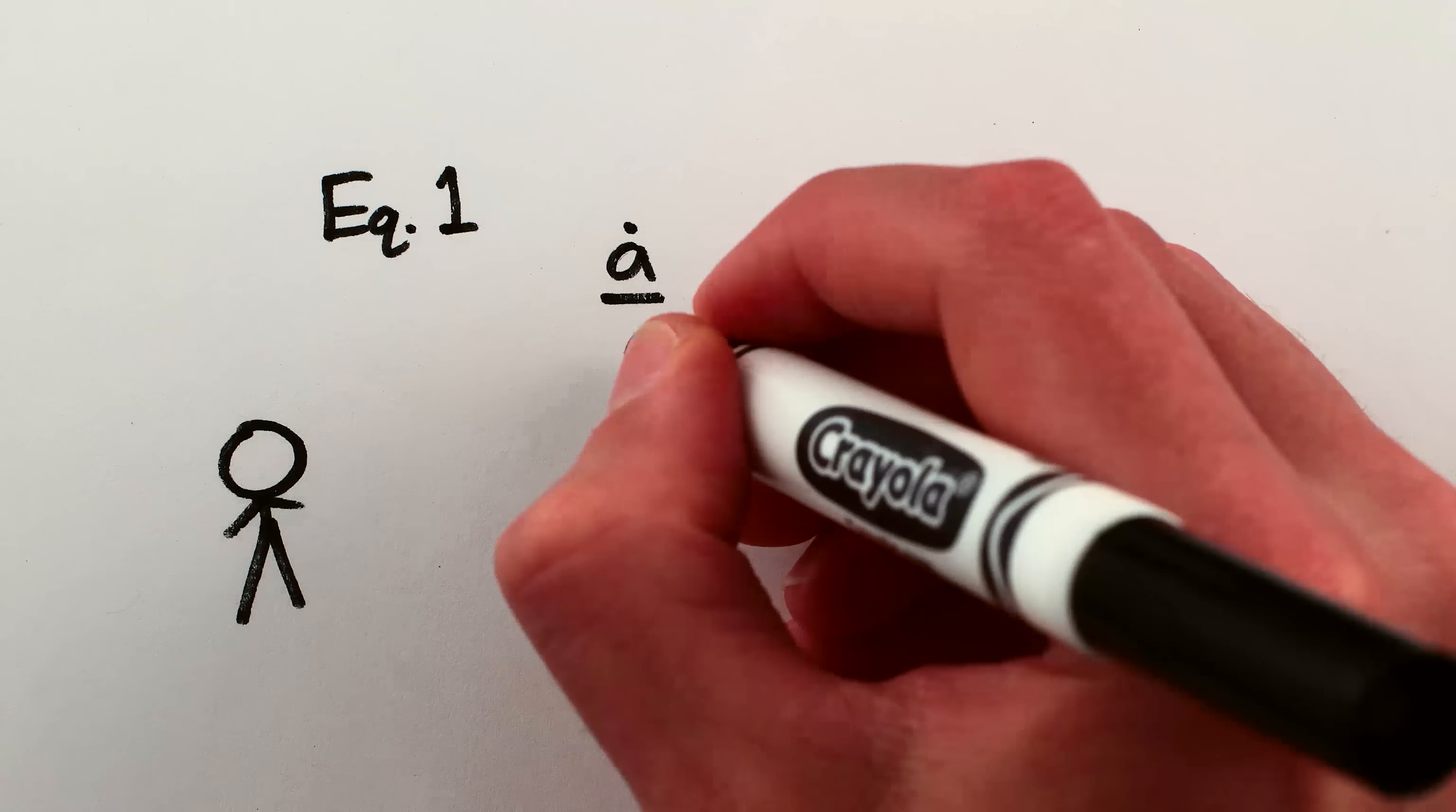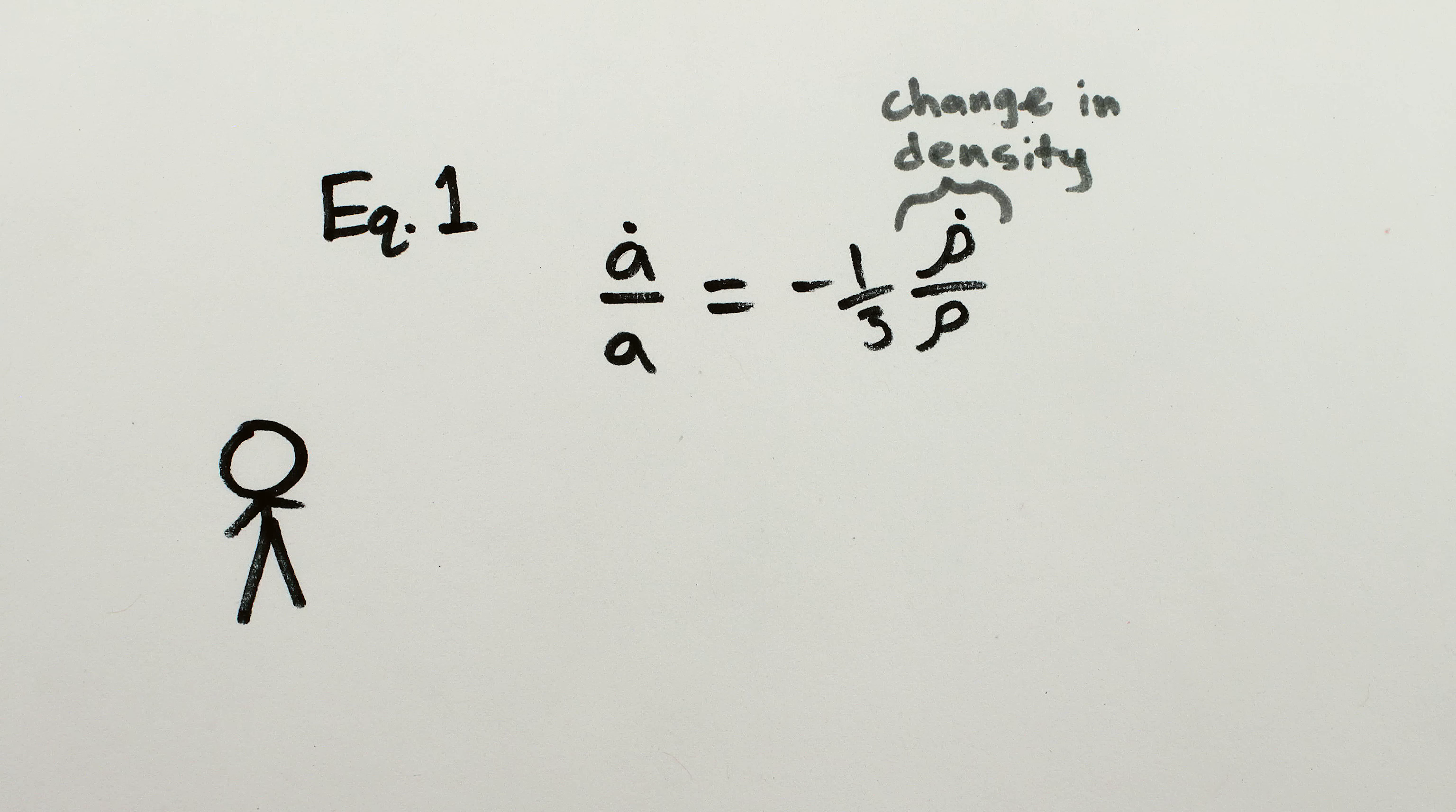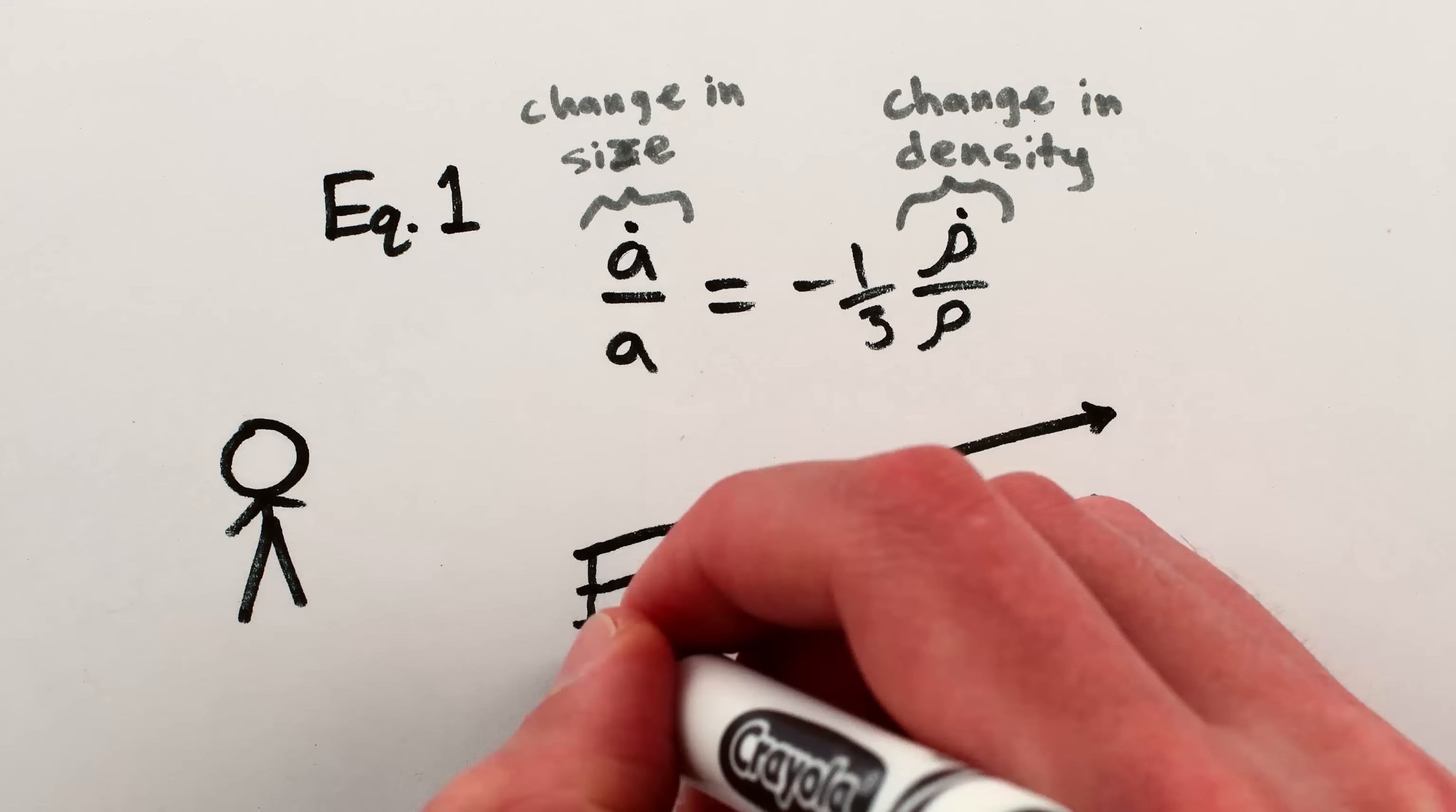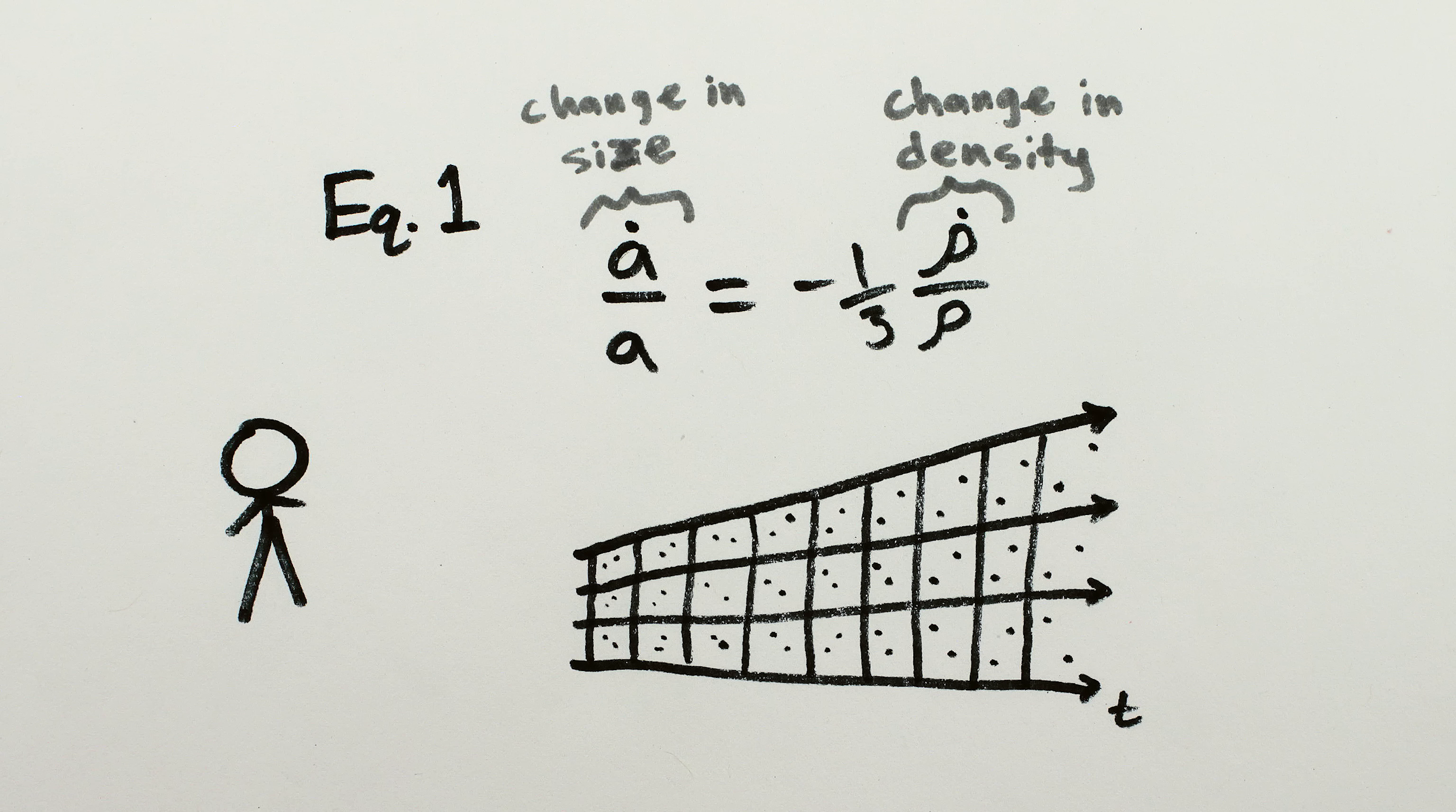Friedman found that the ten equations again reduced to two. The first equation now describes how the change in density of the universe relates to its change in size. Specifically, it says that if the universe gets bigger, then it gets less dense. Which makes sense, stuff's literally spreading out.